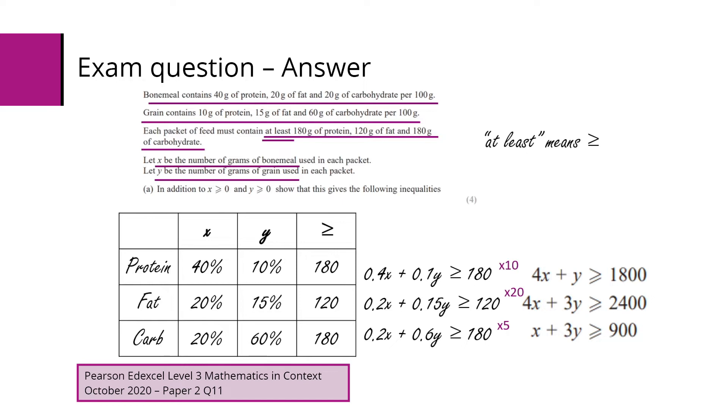So these amounts that each of the ingredients contains we can treat as percentages. We can see for protein we've got 40 percent for the x which is the bone meal and we've got 10 percent for the grain which is the y. For fat we've got 20 percent and 15 percent. So if we convert those into decimals we can say that 0.4x plus 0.1y must be greater than or equal to 180 because it's got to be at least that amount.